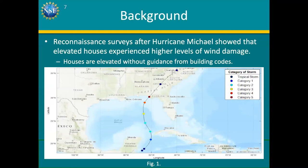Reconnaissance surveys after Hurricane Michael showed that elevated houses actually experience higher wind damage than typical structures, because there are no building codes for engineers to reference when designing these houses. This is just the wind path of Hurricane Michael, ranging from tropical storm to Category 5. The dark red dot on the Florida Panhandle region is where Hurricane Michael hit — and that's the region I'll be talking about.